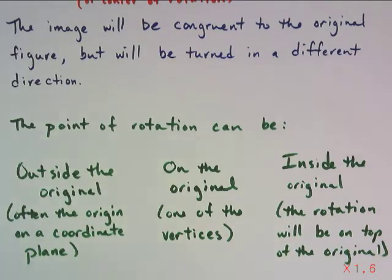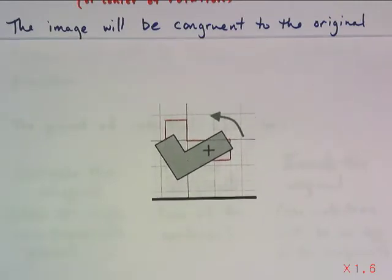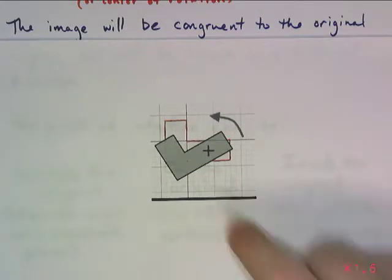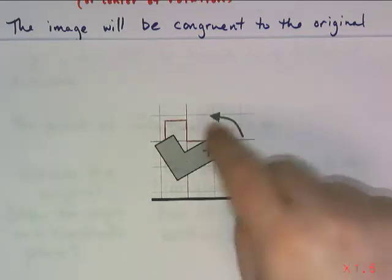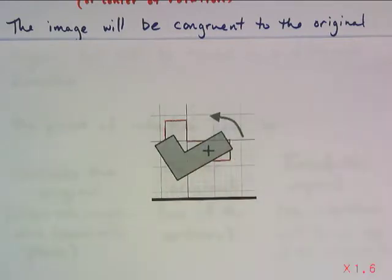The point of rotation can be inside the original. That is where basically you're kind of putting your finger in the middle of the shape and spinning it around on top of itself. This point right here is our center of rotation. The red outline in the background was the original, and they have rotated it this way to create this image, one on top of the other.